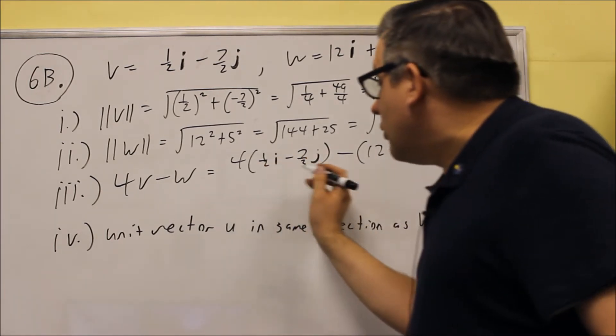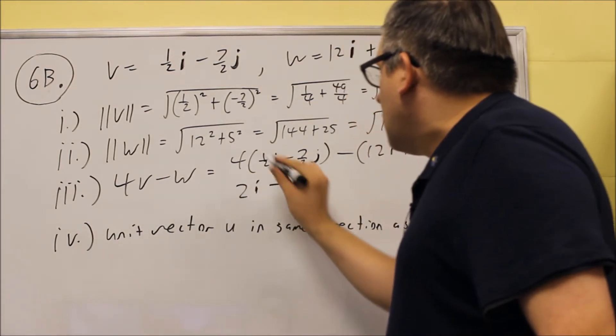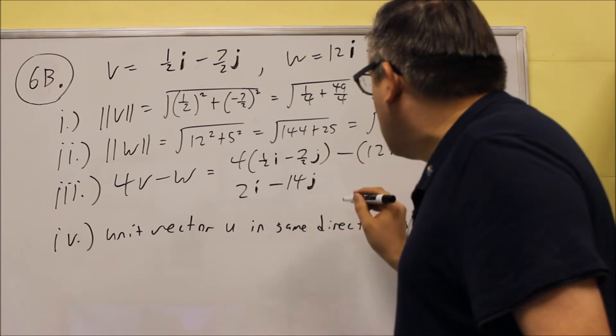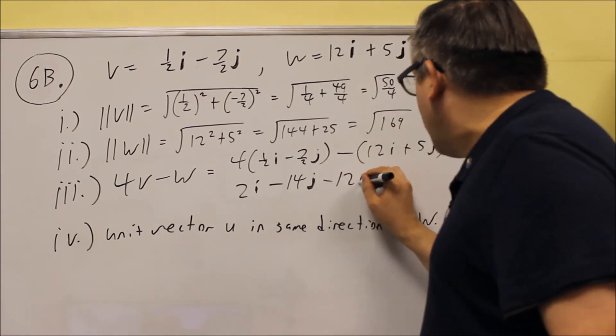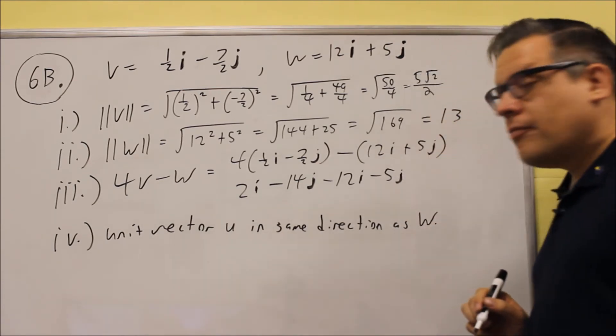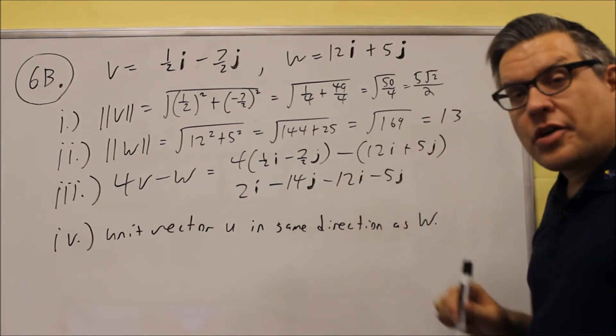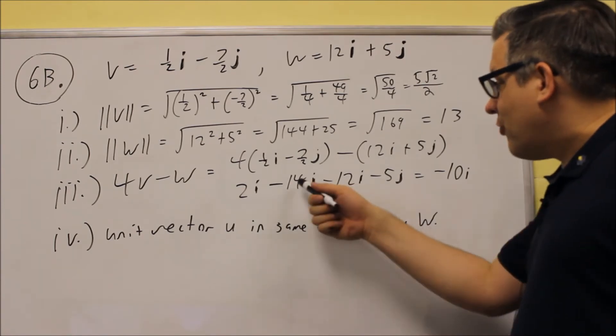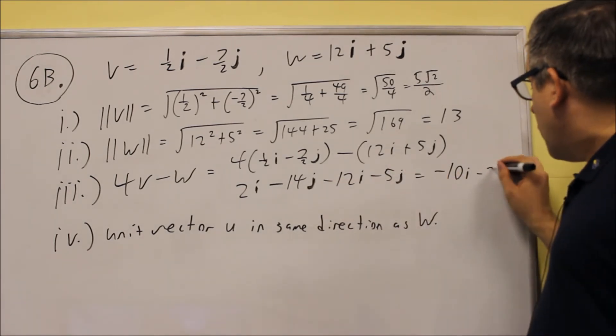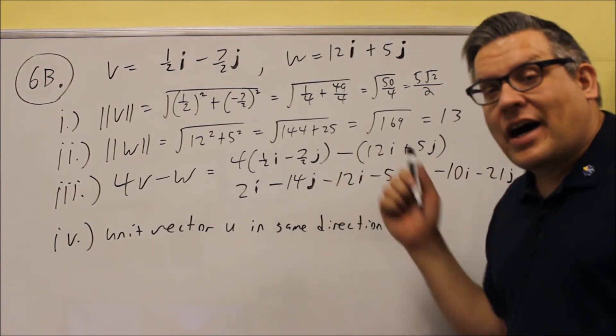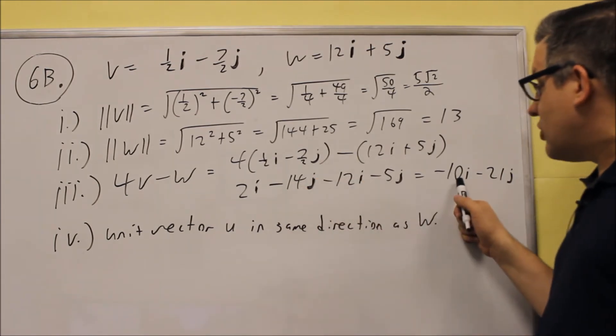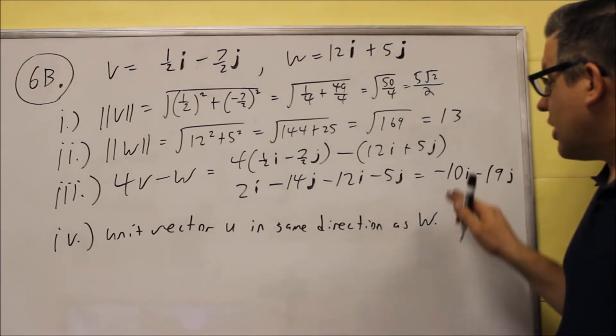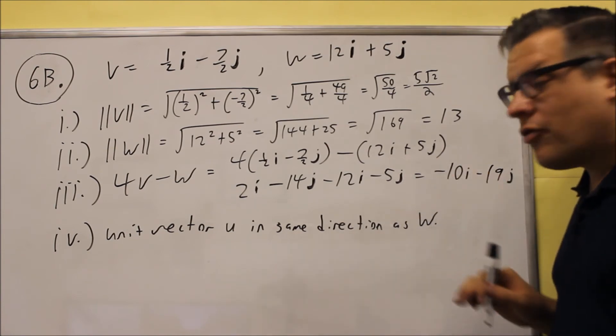4 times 1 half is going to give you 2, so you get 2I minus. This will give you 28 over 2, which is 14. Then the minus will apply to both of those, so minus 12I minus 5J. So then we're just going to add like terms together. 2 minus 12 is negative 10I. Negative 14 minus 5 is going to be negative 21J. So again, add the I's and the J's together separately. Careful with your minus signs there. Negative 10, then negative 14 minus 5 is negative, I should have negative 19, not negative 21. So negative 10I minus 19J should be your answer for part 3.